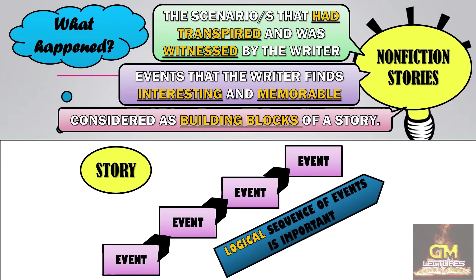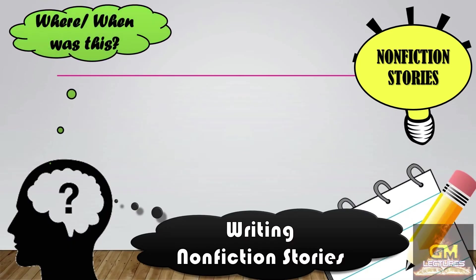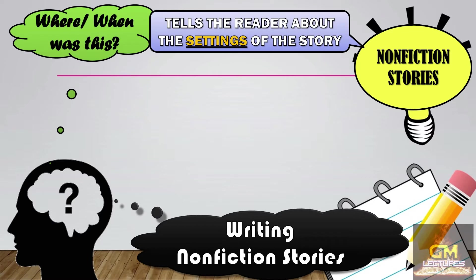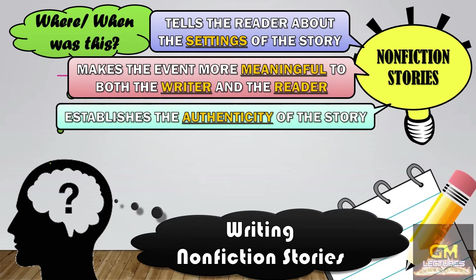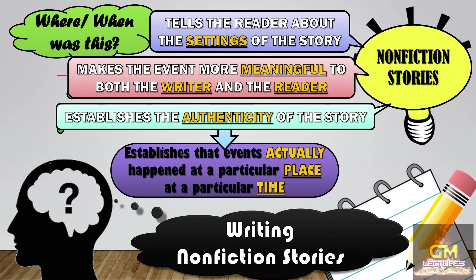As such, a logical sequence of events is important in order to avoid confusion and maintain consistency and integrity of the story. The question 'where and when was this' tells the readers about the settings of the story — the place where the story happened and the time when it happened. When writing stories, it is important to recognize the settings as this makes the event more meaningful to both the writer and the reader. This also helps establish the authenticity of the story, in that the writer is able to confirm that the events actually happened at a particular place at a particular time.